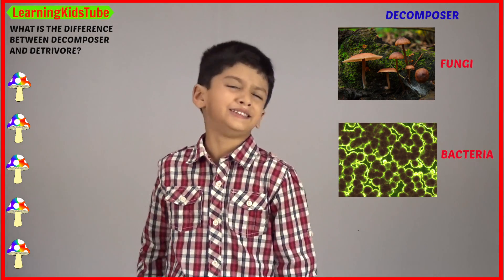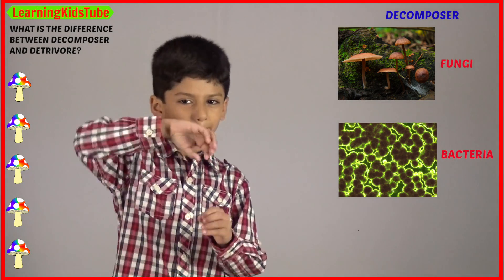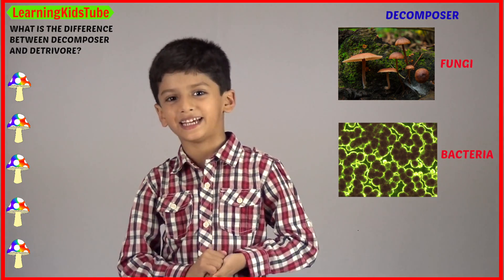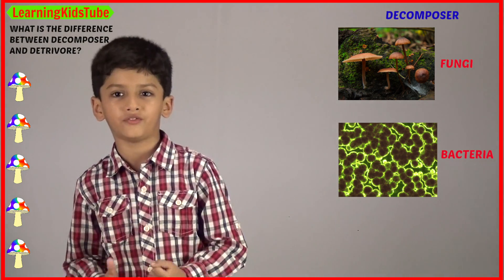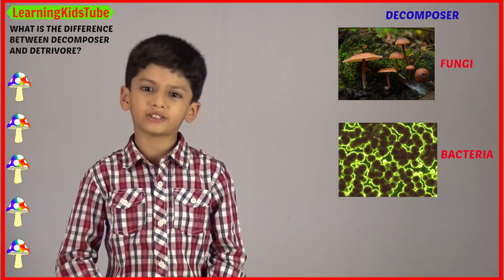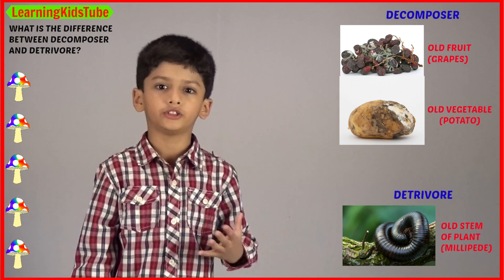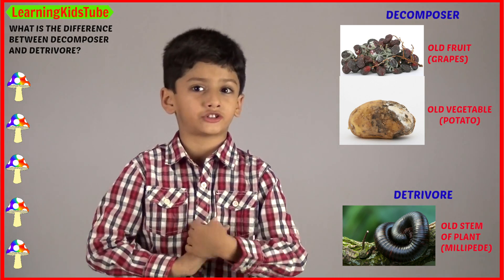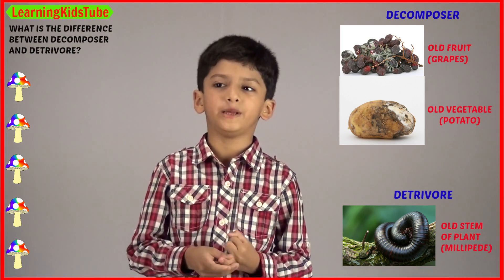On the other hand, decomposers break down their food using biochemical reactions. In this process, they break down the tissue of dead and decaying materials externally. Examples of decomposers are fungi and bacteria. You can see the impact of fungi and bacteria on your old food, vegetables, and fruits, even at your home. You can also find detritivores very easily in your garden soil, like earthworms and beetles.